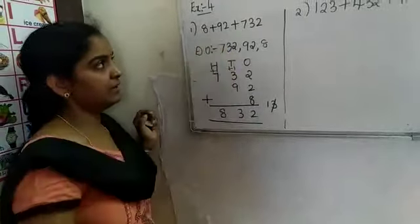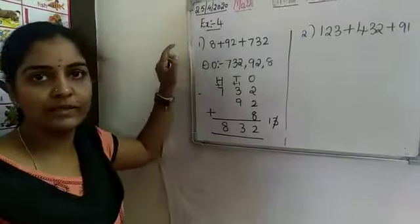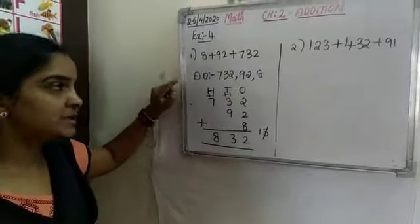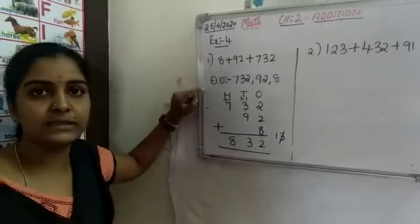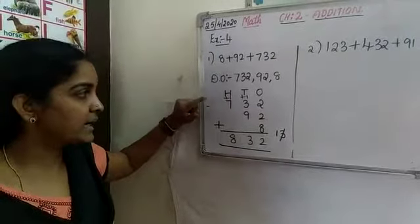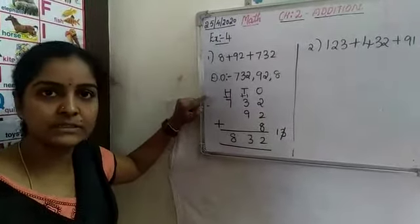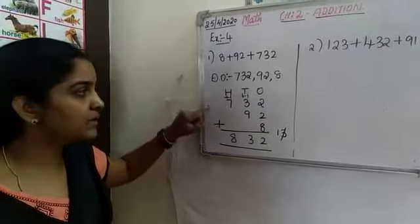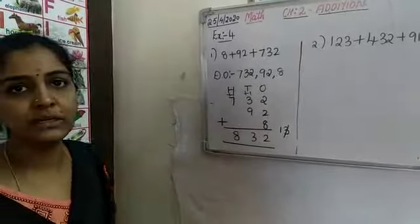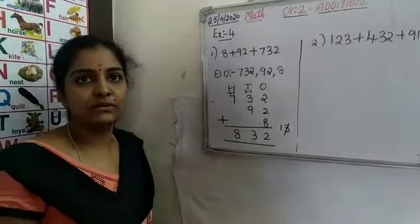So like this, for different numbers of digits, what you will do: first arrange in descending order, next write the place columns, and then arrange the digits according to their places before adding.